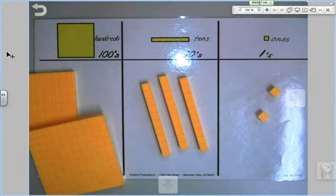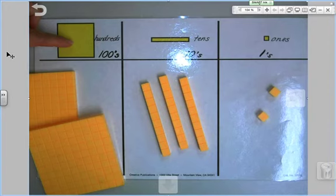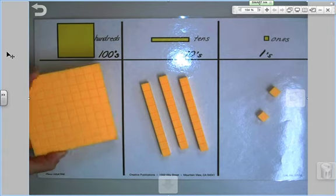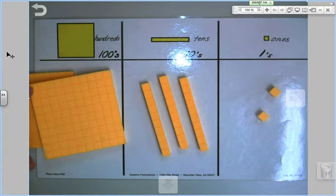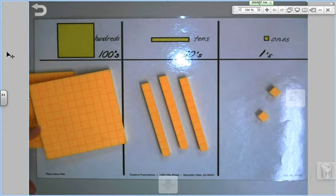The blocks are laying on are called a placemat. These are hundreds, the word hundreds and the number hundreds. These are called hundreds because there are a hundred little tiny cubes in each one. There are a hundred ones in this hundreds flat.